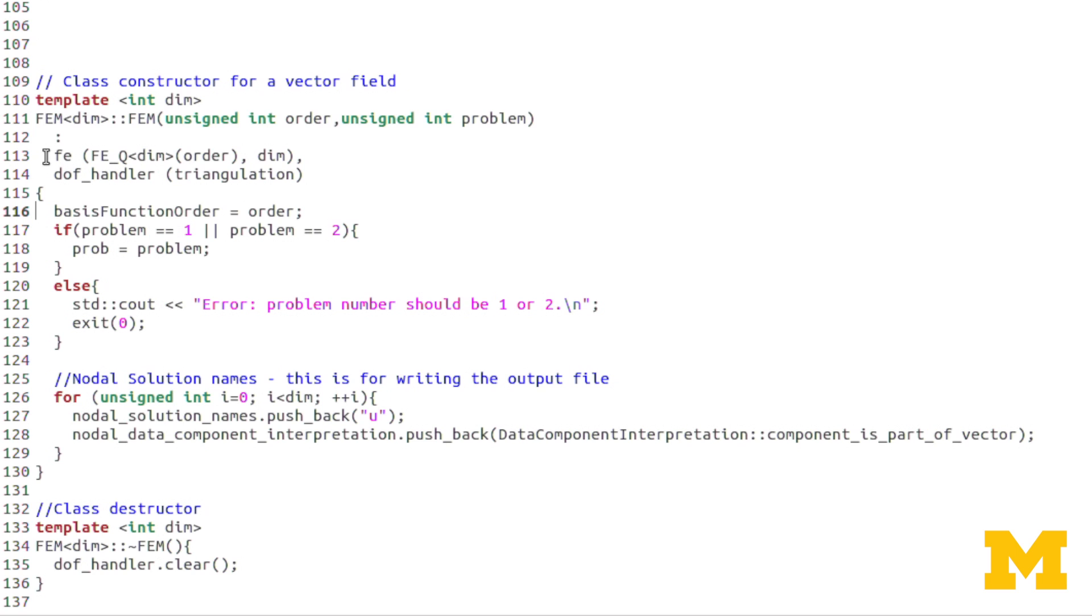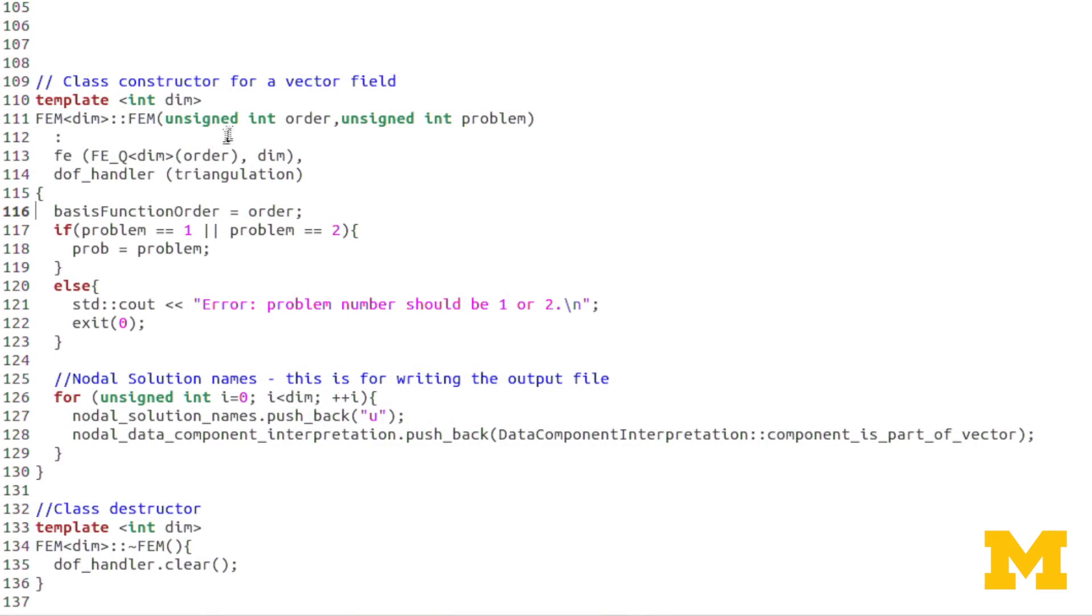So FE, in the constructor for FE, we input this FEQ, which again is a deal.II object. But notice the input is order. So FEQ will keep track of what Lagrangian basis function order we're using. The reason it needs to know that is so that it can keep track of how many nodes there are, right? Because obviously, if we're using a higher order basis function, then there are more nodes. We have mid-side nodes.